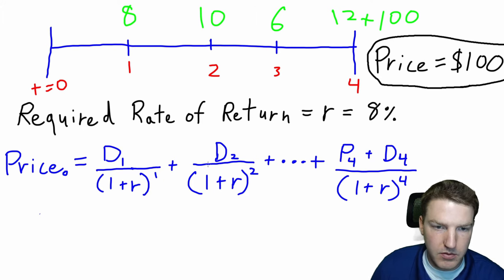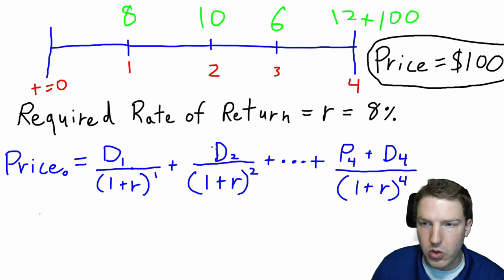And then we'll do the same thing for dividend D2, which is this $10 here. And we'll do one plus the required rate of return of 8% to the power of two, because that is the point in the timeline that it represents. And we'll just do that all the way through to the ending value.